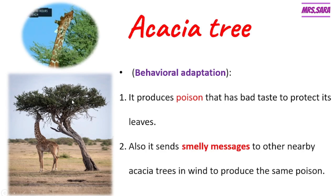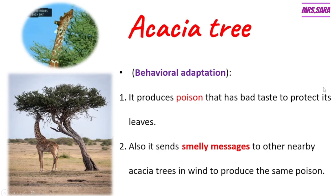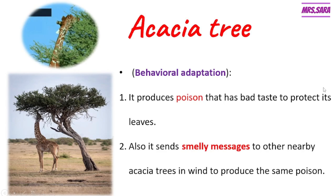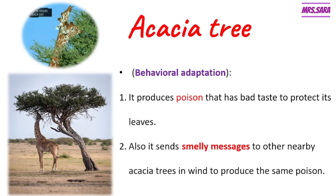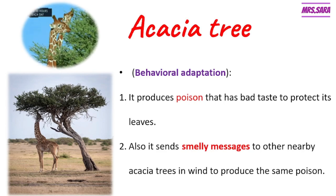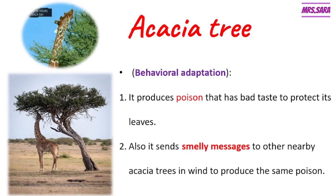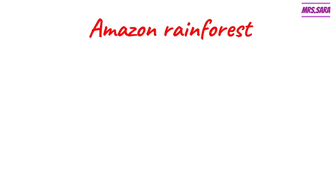But acacia tree is very tricky — it sends a smelly message through the wind to the other nearby acacia trees to produce the same poison. So the behavioral adaptation of acacia tree is: it produces poison that has a bad taste to protect its leaves, and it sends smelly messages to nearby acacia trees to produce the same poison.